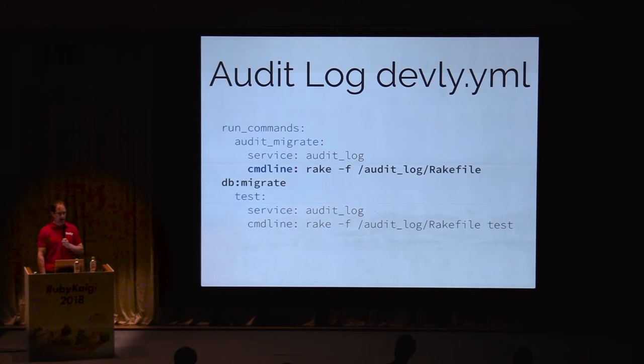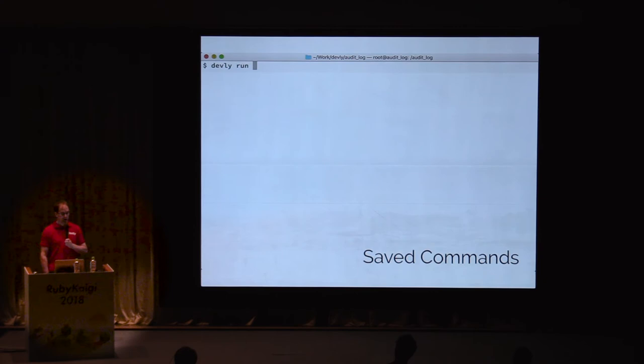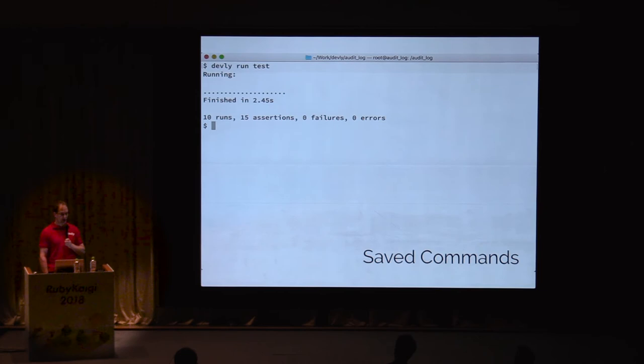The run commands are a collection of friendly command names for us to run. I chose 'audit migrate' as the name of the command which will run the migrations. The command runs on the audit log service, and the command line is the one we've seen earlier, which runs the database migration task. We can also define a test command to run the tests from inside the service — this way anyone can run tests where all the dependencies are up to date. Now we can run audit migrate from the audit log directory, or run the tests. You can have separate racks for unit tests and a larger rack with more services for integration tests. Either test suite could be started from a saved command and reused in a continuous integration environment.